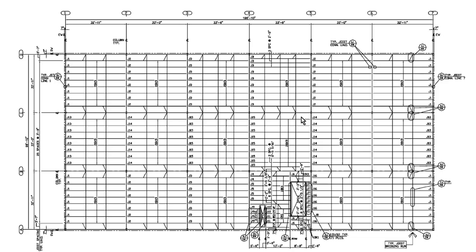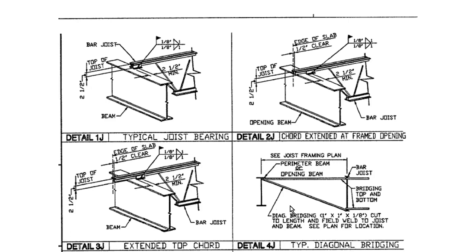On top of those beam girders, we have joists. In this plan you can see the way the joists run — they sit on top of those beams. Along with the type of joists used in this layout, this is the detail. It's pretty quick and basic to see that the joist here sits on this beam, and there are several different sizes based on the loads and the type of floor system you're using.